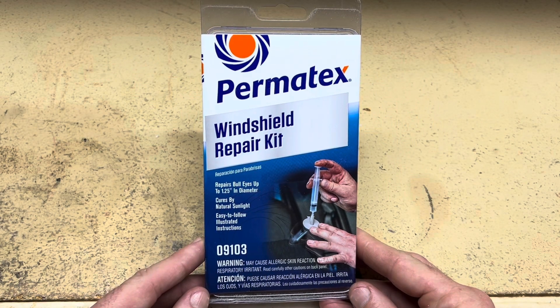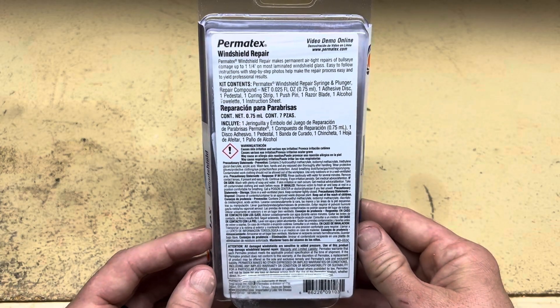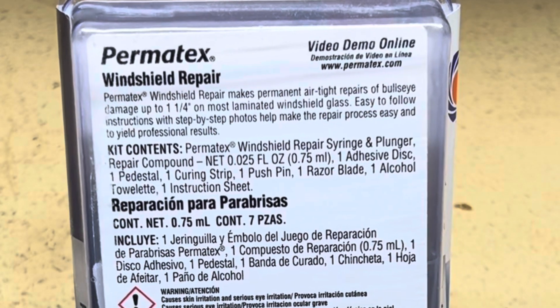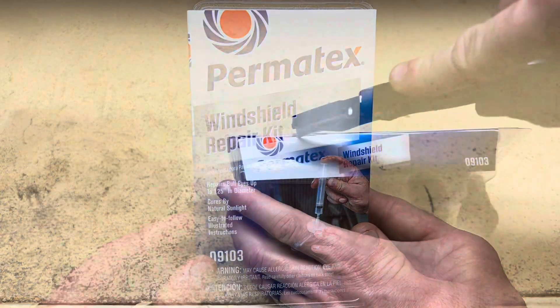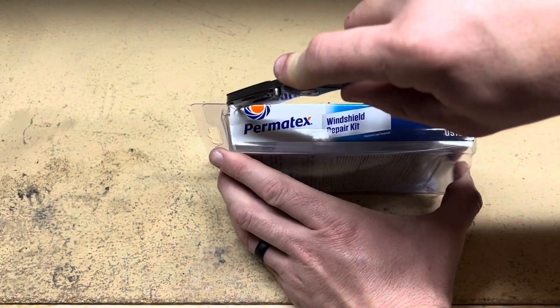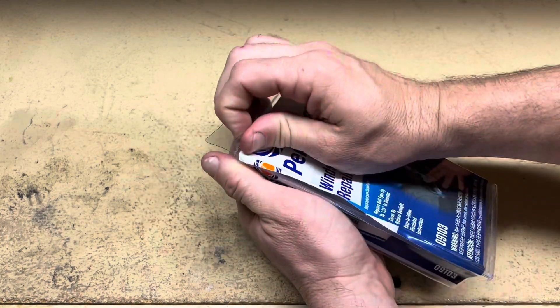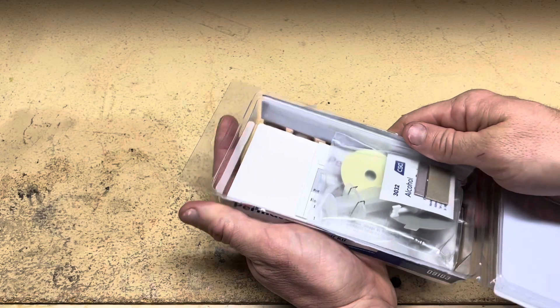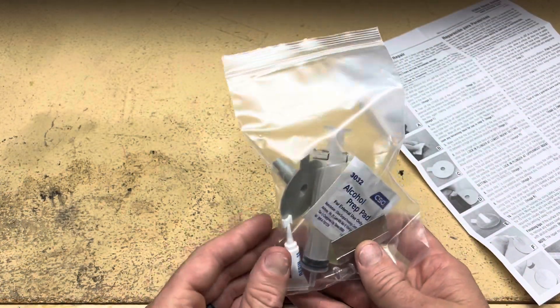In this video we'll be taking a look at this windshield repair kit by Permatex. I recently noticed a small crack in my windshield and with a price tag of around $20, I figured I'd give this product a try before replacing it. Everything needed for the repair is included in the package. The product claims to repair cracks up to an inch and a quarter.